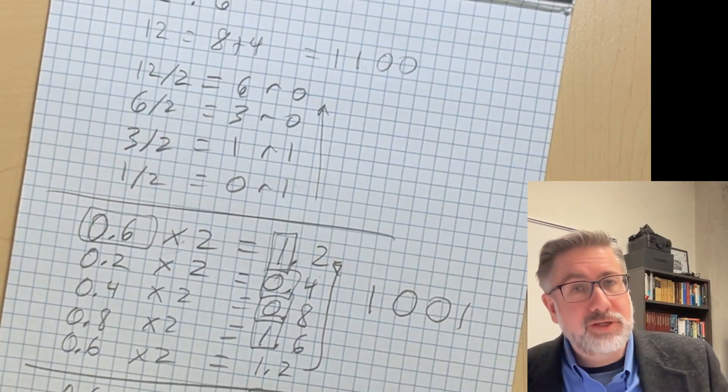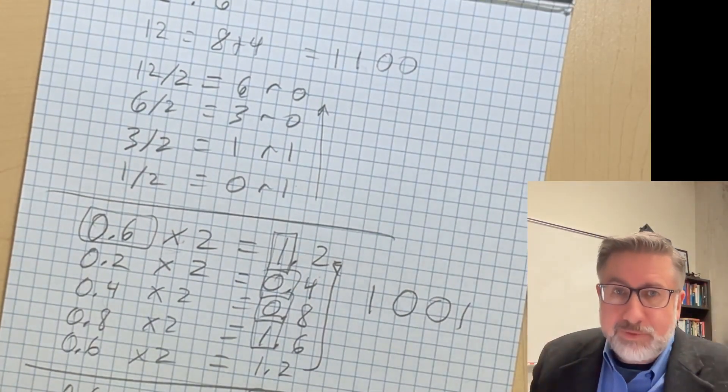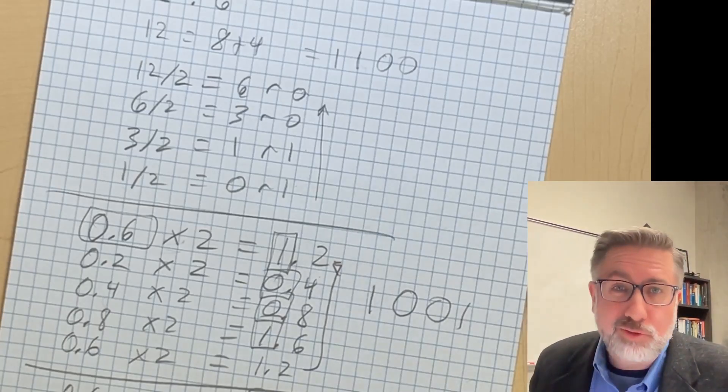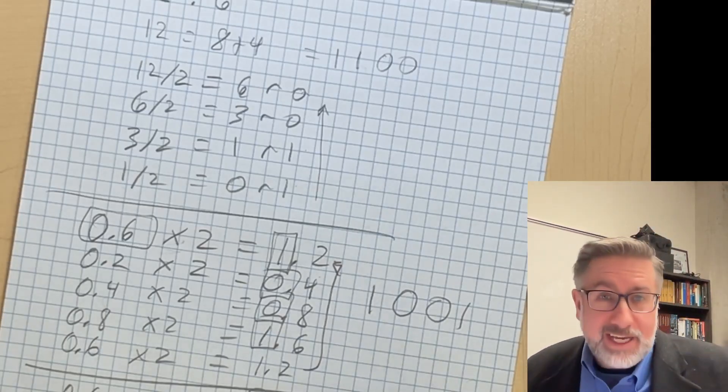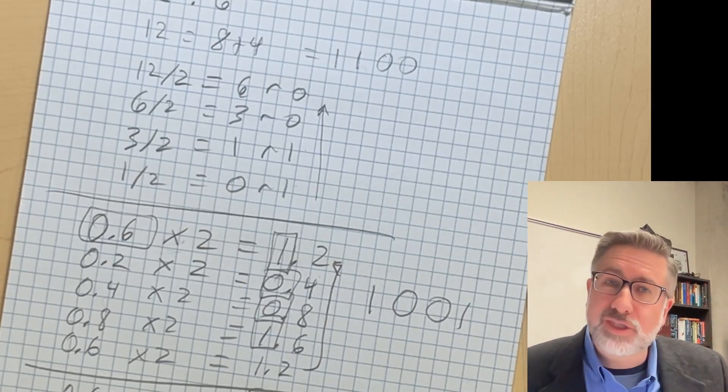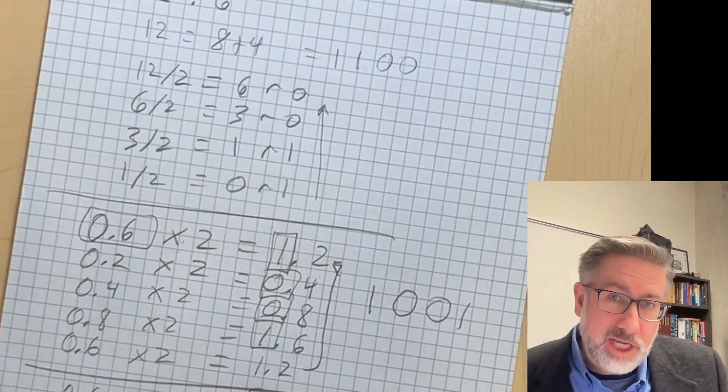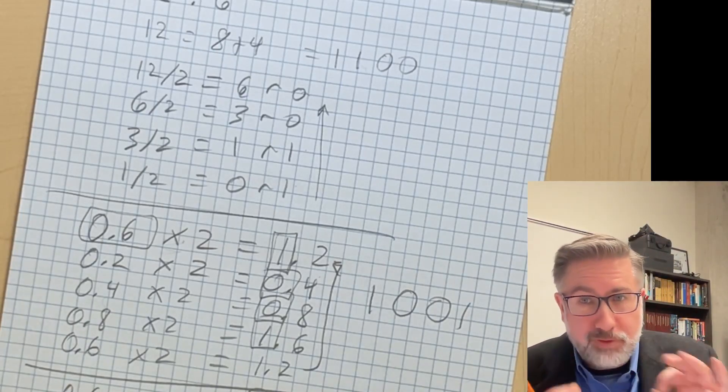So now we have a pretty good idea of how to convert fractional base 10 numbers into fractional binary numbers. Next we're going to see how we then put those together into some sort of a representation that allows the decimal point to float around.